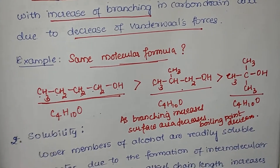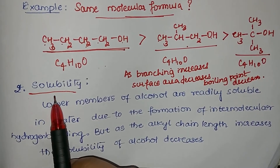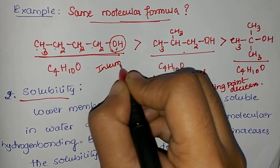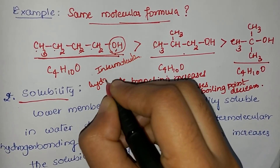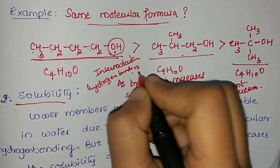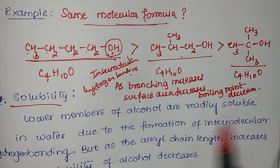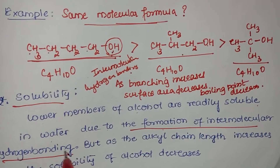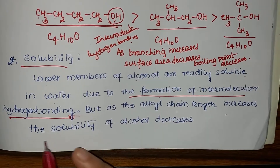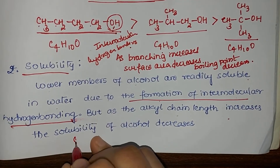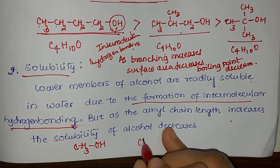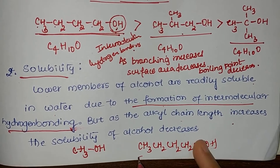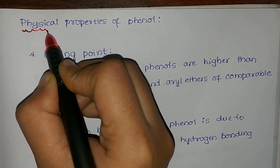Let us consider solubility. Solubility refers to the extent to which a substance dissolves in water. Due to the presence of the OH group, alcohols are soluble in water because OH has a tendency to form intermolecular hydrogen bonding with water molecules. Lower members of alcohols are readily soluble in water due to this intermolecular hydrogen bonding. However, as the alkyl chain length increases, solubility decreases. For example, methanol (CH₃OH) is much more easily soluble in water compared to a longer chain alcohol like heptanol (CH₃CH₂CH₂CH₂CH₂CH₂CH₂OH).